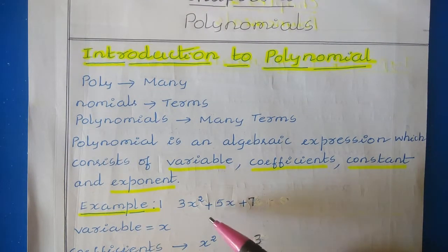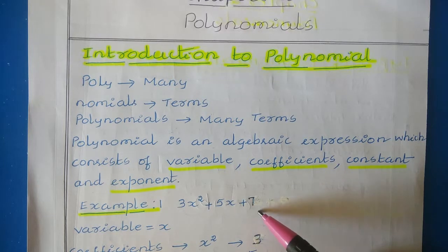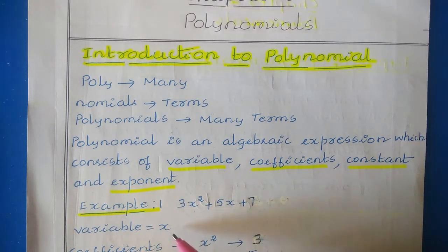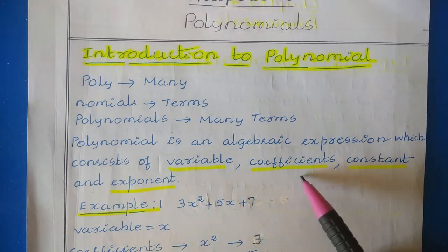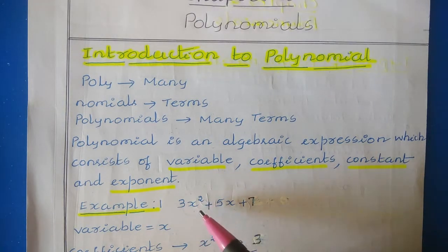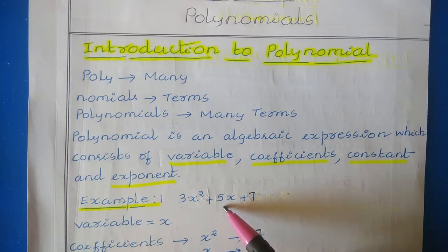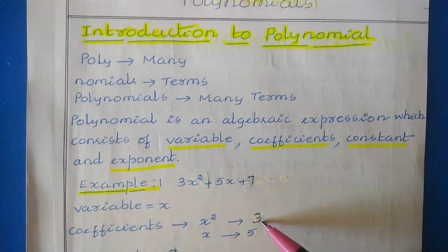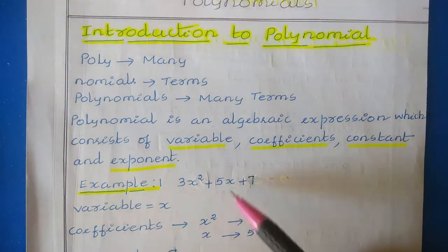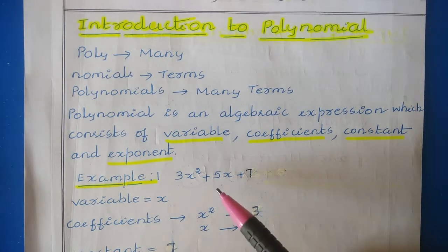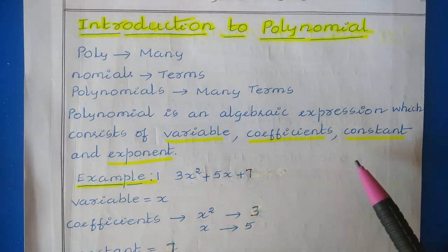In this example, 3x² + 5x + 7, the variable is x. The coefficient is the value associated with the variable — for x² the coefficient is 3, and for x the coefficient is 5.